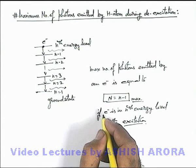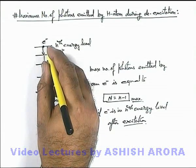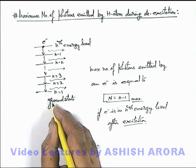And if we talk about minimum photons, minimum number of photons will be 1 when electron transits to n-eth level directly to n equal to 1.